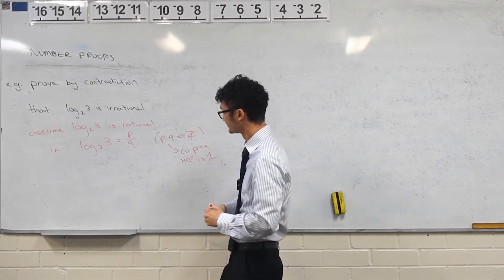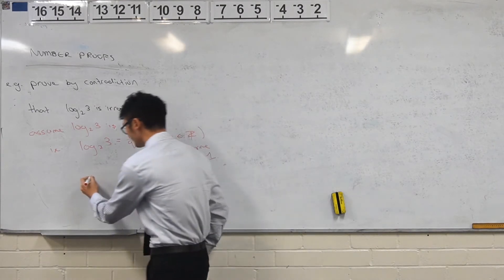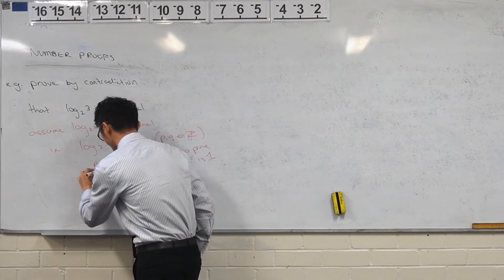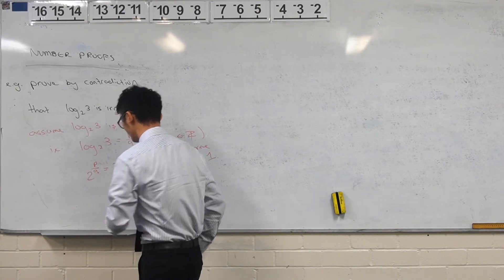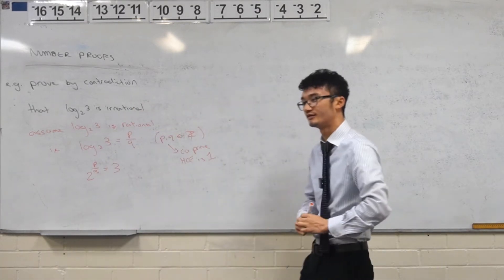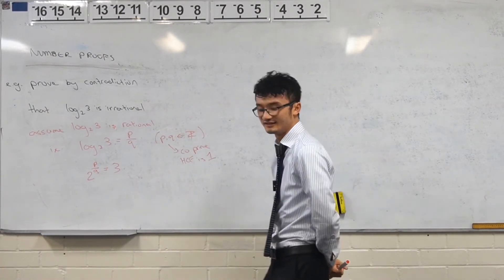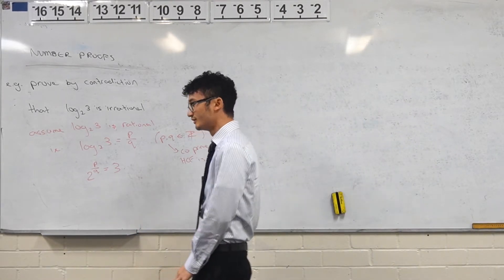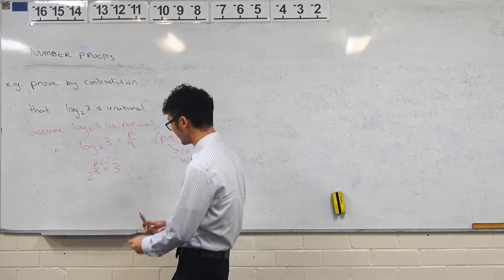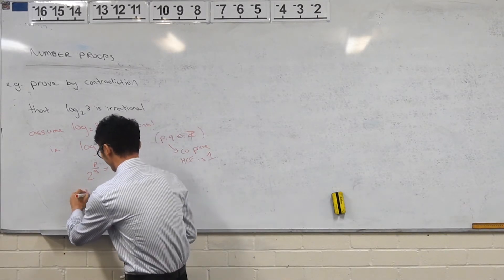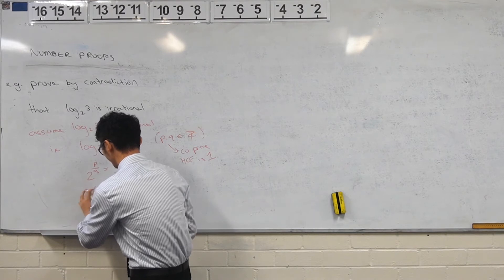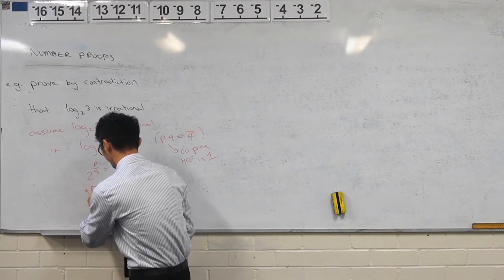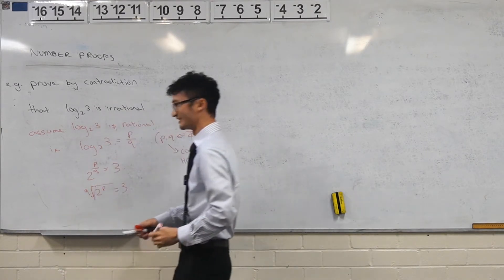How would you write that? Um, 2 to the power of p over q. Yep. How could you write that? Square root. Yeah. Like a radical form. Yeah. Like with the roots and stuff. Yeah. So you could say that the qth root of 2 to the power of p, is that what you're kind of saying? Right. Yeah.